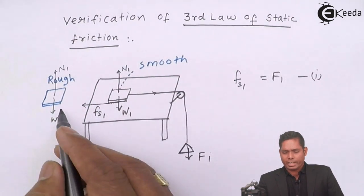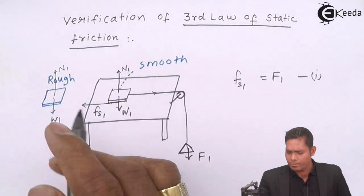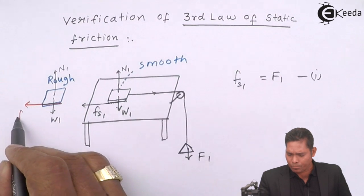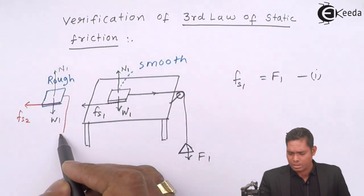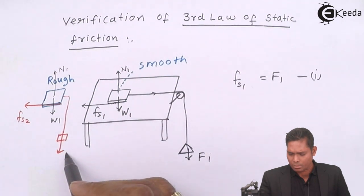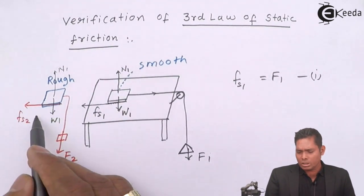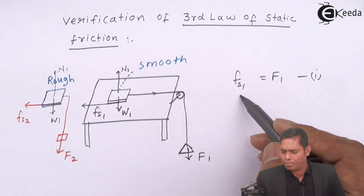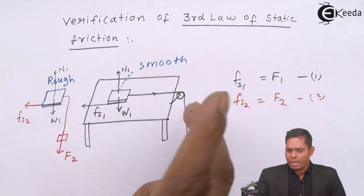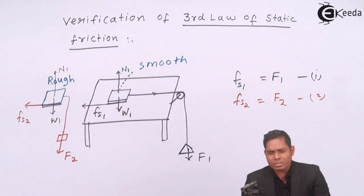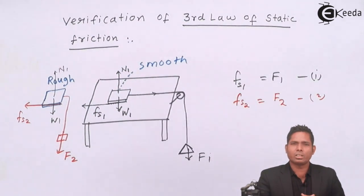For this smooth block, this f1 which is equal to fs1 is noted. In the second case when this is placed, the frictional force produced here is fs2, and the force at which the motion starts is suppose f2. So fs2 is equal to f2. The same thing is conducted with two blocks having same weight providing same normal reaction. Only thing that is changing is the roughness and smoothness of the surface.